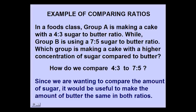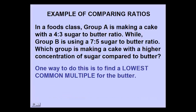Since we are wanting to compare the amount of sugar, it would be very useful for us to make the amount of butter the same for both ratios. One way to do this is to find the lowest common multiple for the amount of butter.